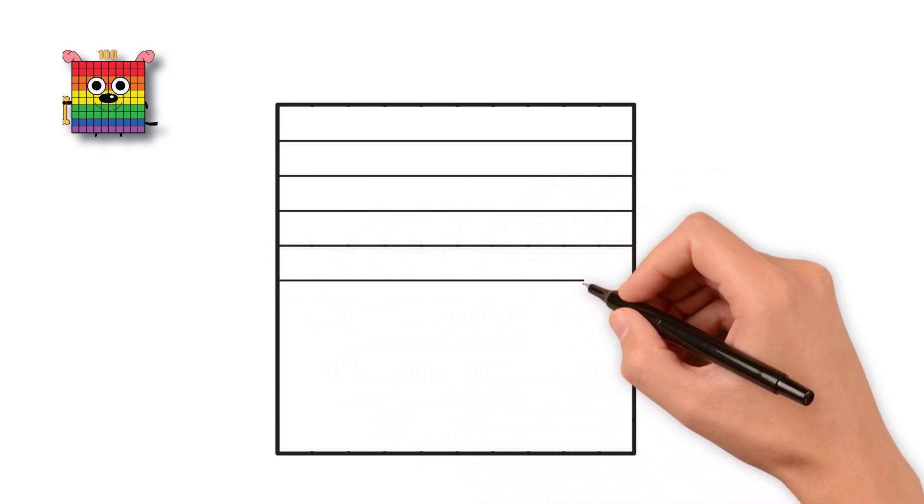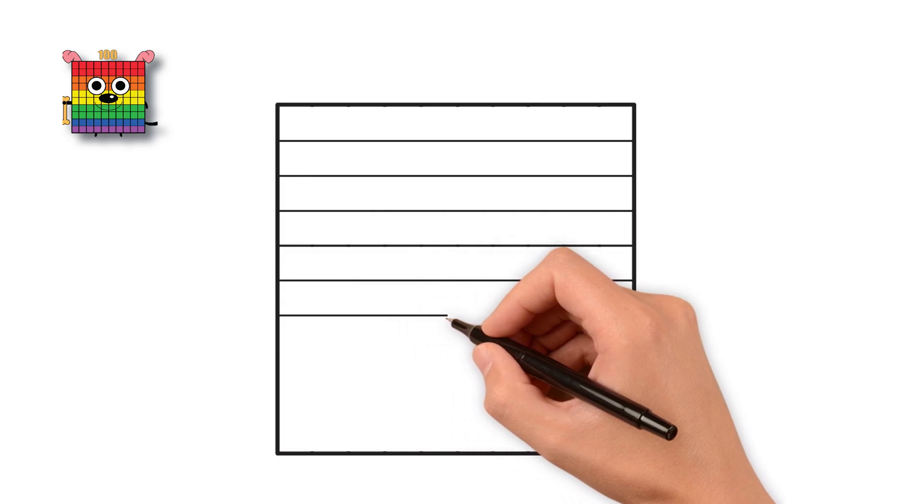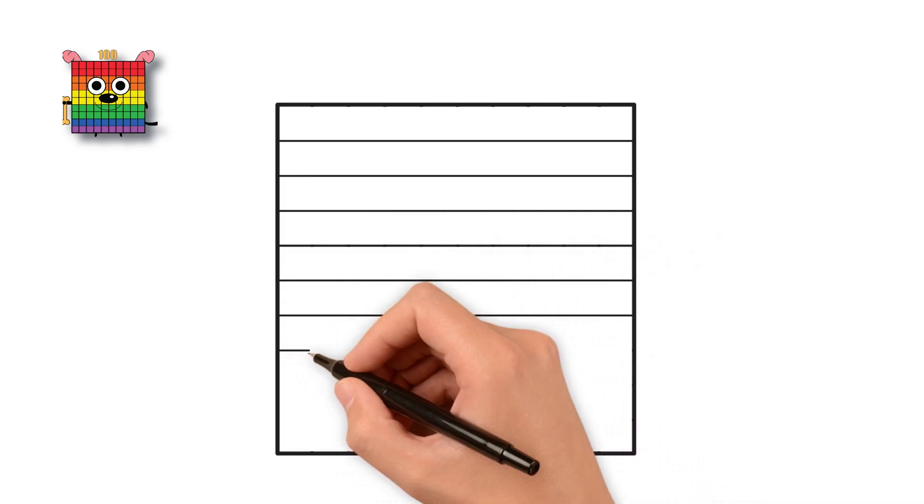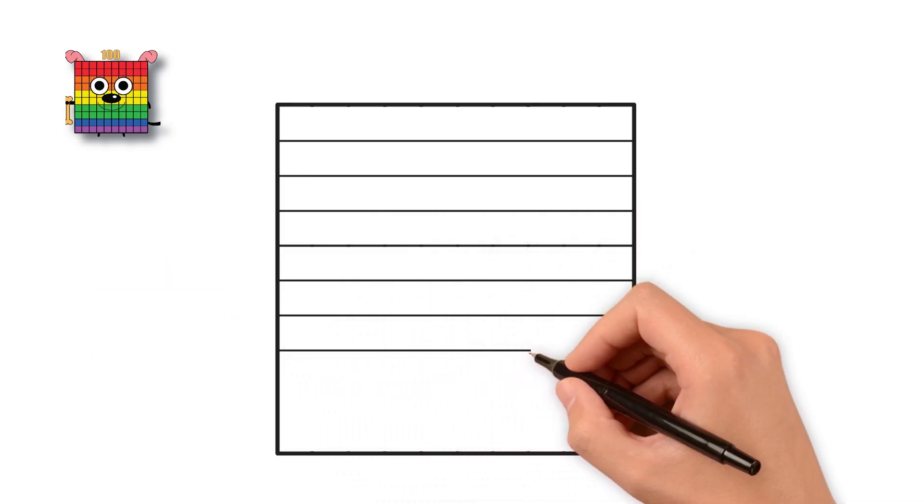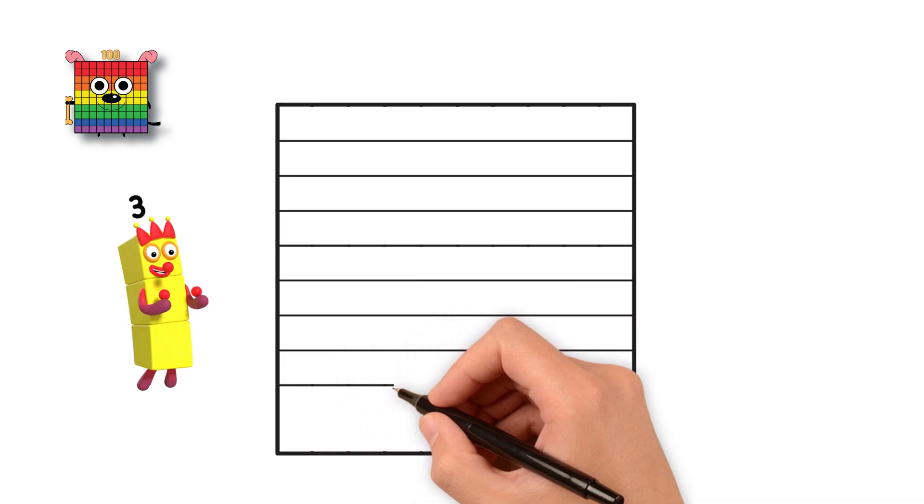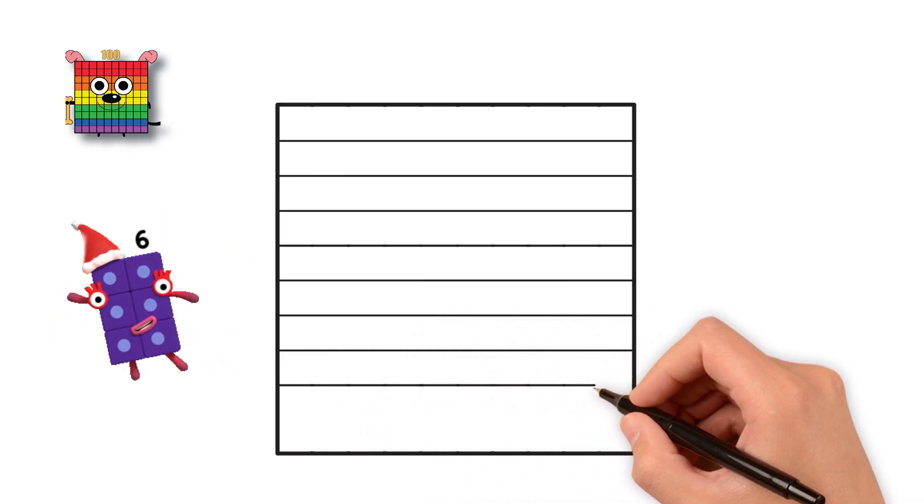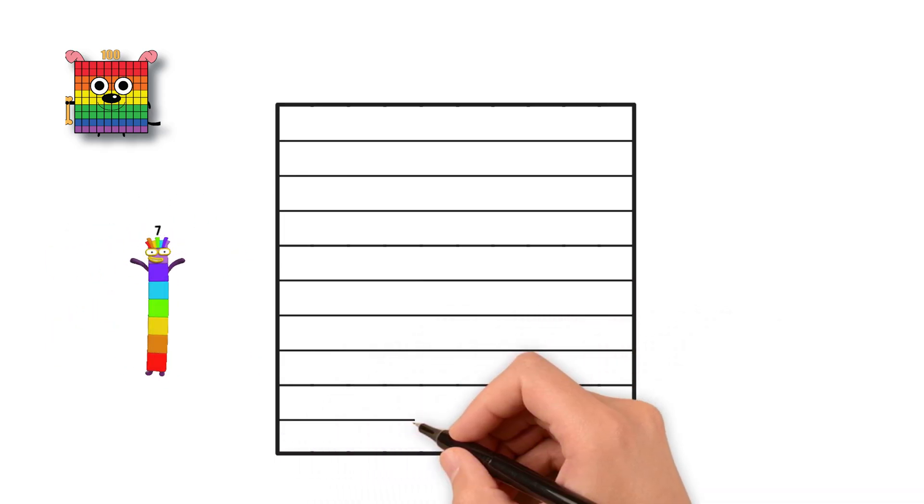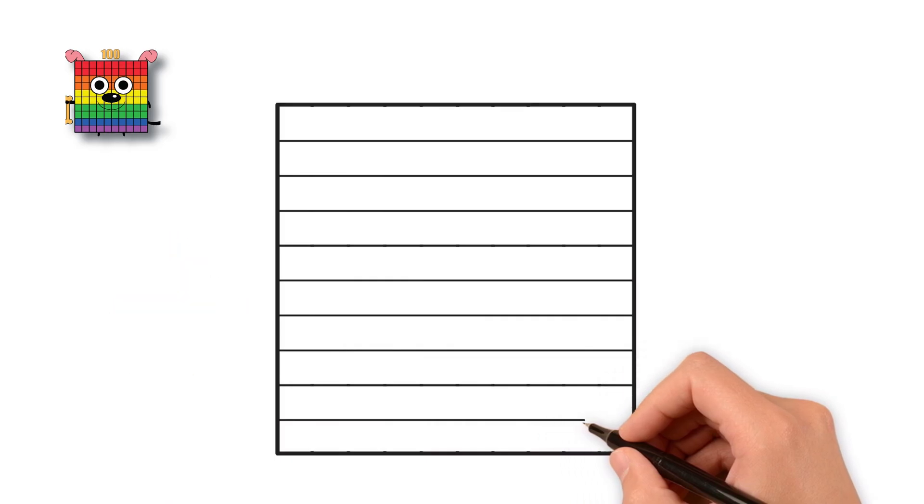We need a total of 9 horizontal lines. Let's count them slowly as we draw them. 1, 2, 3, 4, 5, 6, 7, 8, 9! Great job!